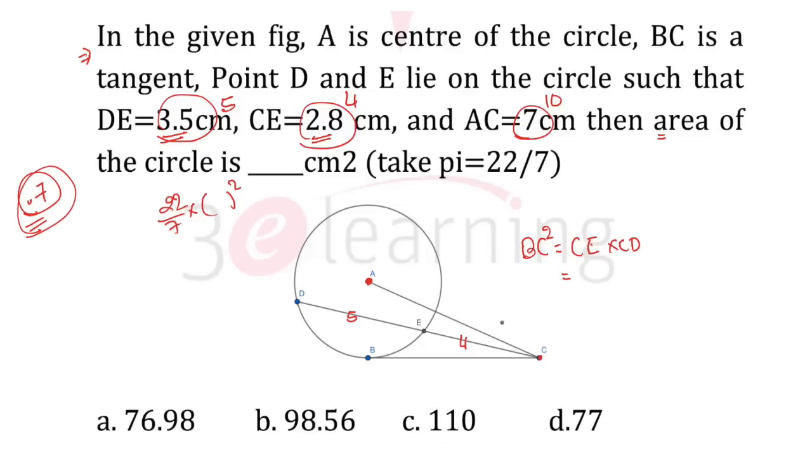We have to find the value of BC. BC square is 4 into 9, so BC is 6. Our BC is 6 and AC is 10, so we can say this one is 8. So 6, 10, and 8, that is a right angle triangle.